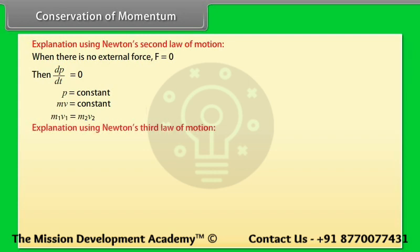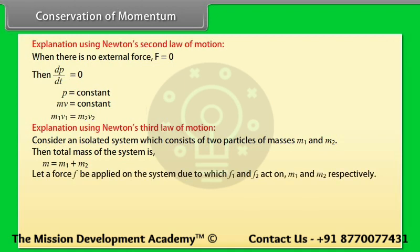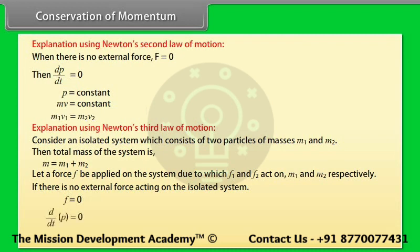Using Newton's third law: consider an isolated system of two particles of masses M1 and M2. The total mass is M = M1 + M2. Let a force F be applied on the system, due to which F1 and F2 act on M1 and M2 respectively. If there is no external force on the isolated system, then F = 0, d/dt(P) = 0, and P = constant. Hence the law of conservation of linear momentum is proved.